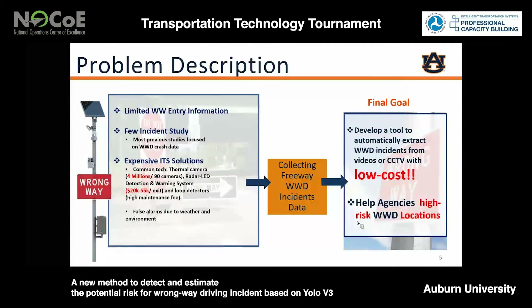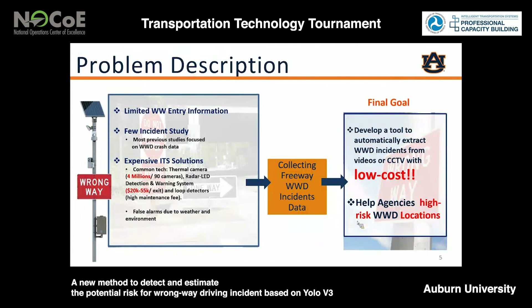Currently, the most commonly used solutions are very expensive ITS, such as thermal cameras, radar, LED detection and warning systems, and loop detectors. The cost along with the maintenance fees can be up to $1 million. Our group is trying to develop a very low-cost tool to automatically extract wrong-way incidents from video or CCTV to collect freeway incidents. Also, there are many exit ramps on freeways which are high-risk wrong-way driving locations, and which ramps are worth installing expensive warning systems you may not know. Our project can help you analyze the wrong-way incidents and select the hotspots with very low cost.